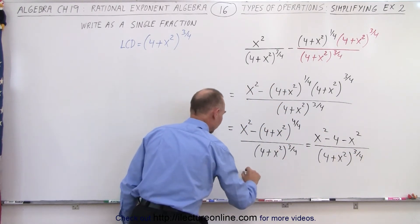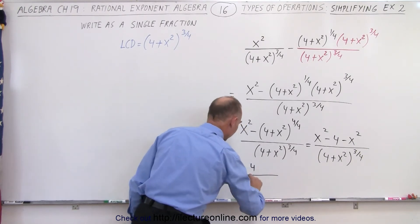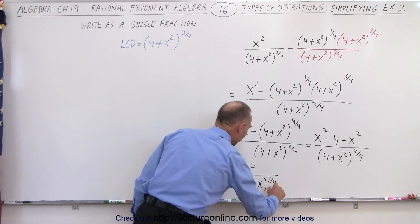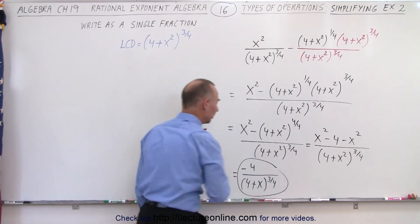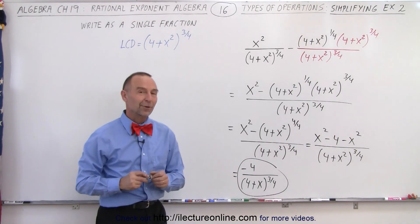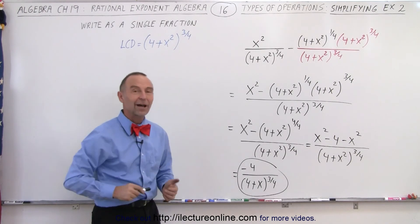And of course the x² terms cancel out, and finally this is equal to -4 divided by the quantity (4+x²) to the 3/4 power. This is then the final simplified format written as a single fraction of our original problem, and that is how it's done.